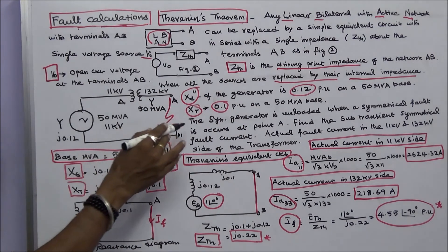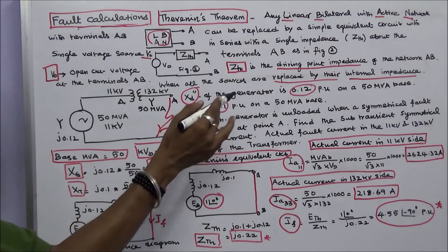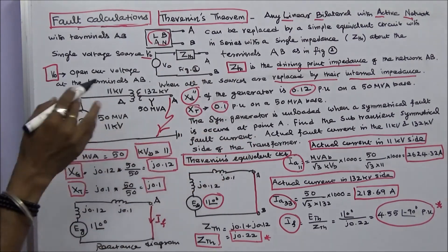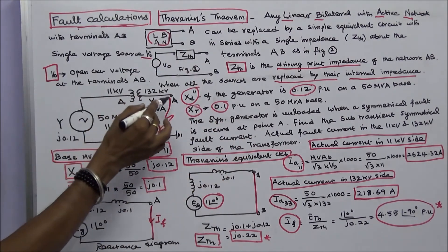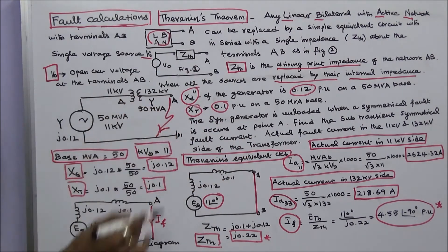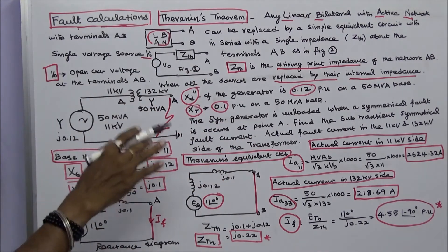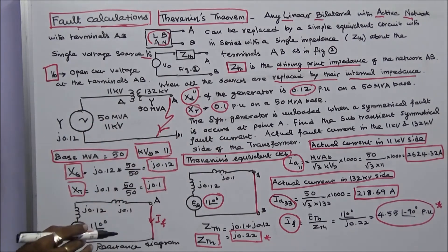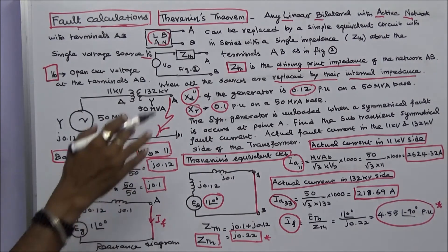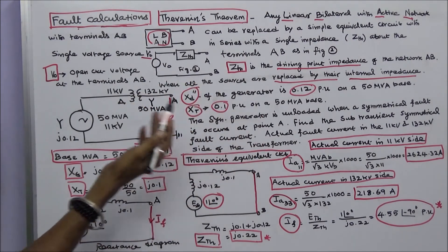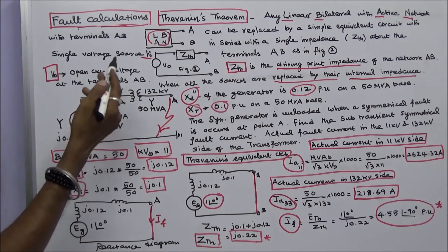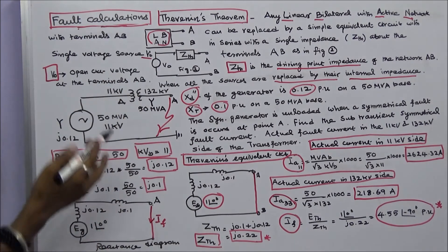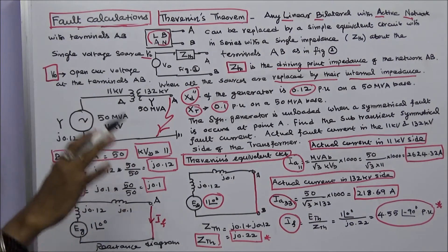The synchronous generator is unloaded when a symmetrical fault occurs at point A. Find the sub-transient symmetrical fault current, the actual fault current in the 11 kV side, and the actual fault current in the 132 kV side of the transformer.